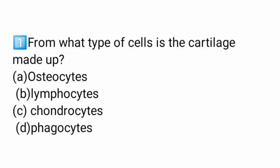Second option is lymphocytes. Some cells perform phagocytosis — they engulf particles. For example, monocytes, macrophages, and neutrophils are phagocyte cells. The answer to 'From what type of cells is the cartilage made up of?' is chondrocytes.